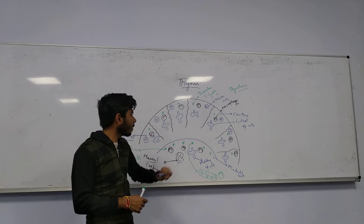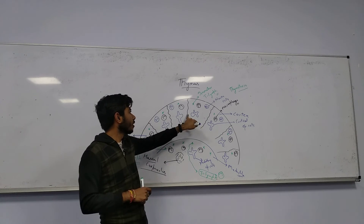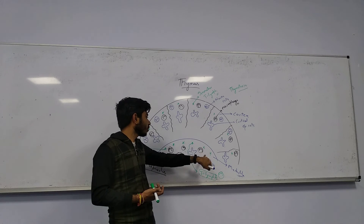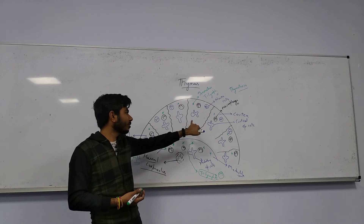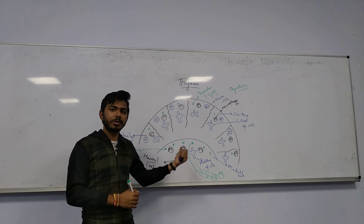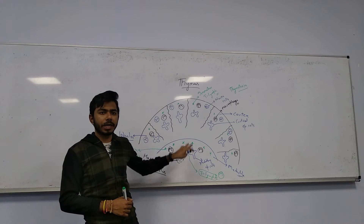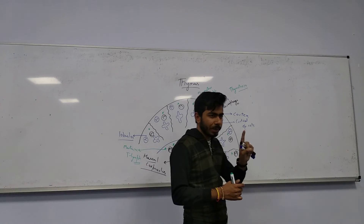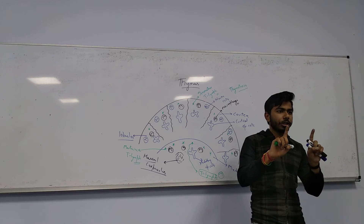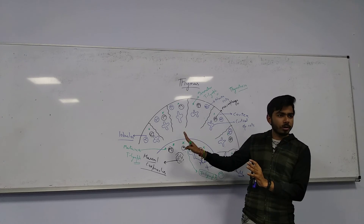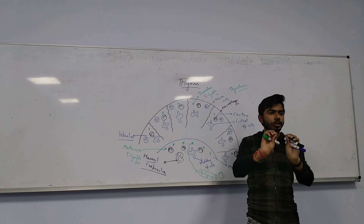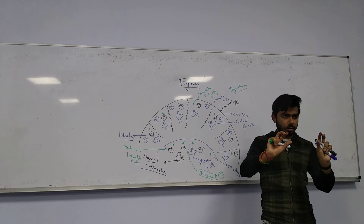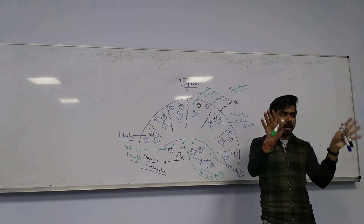Cortical epithelial cells nurture the immature T lymphocytes in the cortex, helping them grow. Medullary epithelial cells help in the medullary region. Finally, you will have mature B lymphocytes and mature T lymphocytes in your blood circulation. The primary function of the primary lymphoid organs is to give mature products - bone marrow gives mature B lymphocytes, and thymus gives mature T lymphocytes.